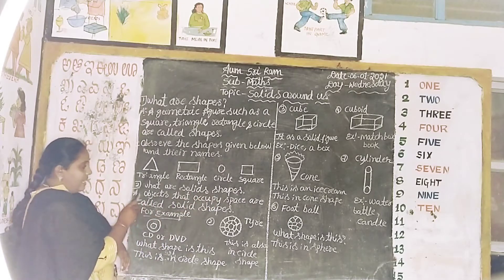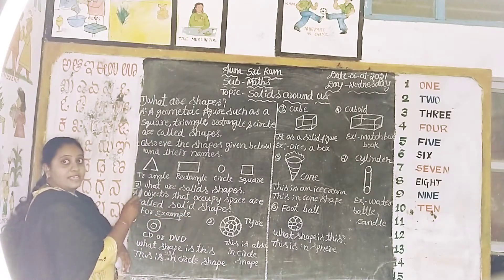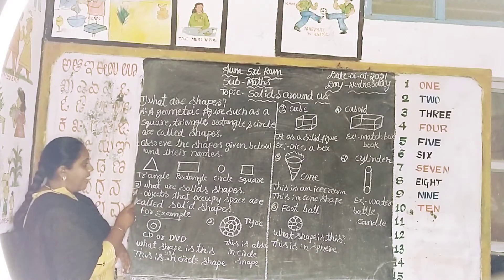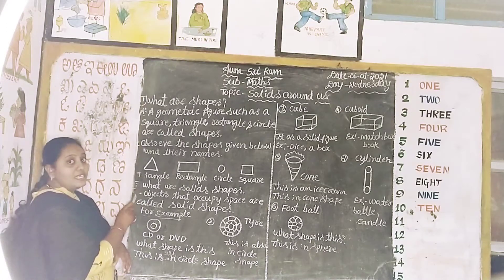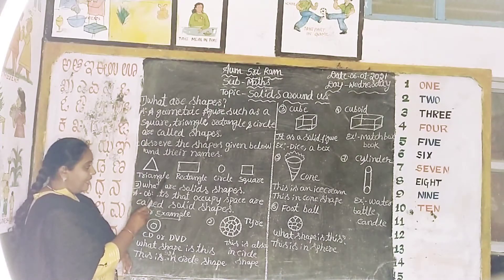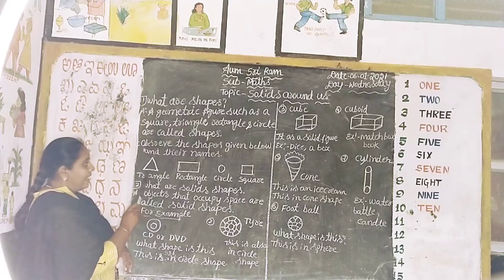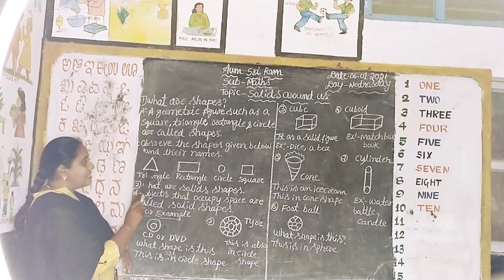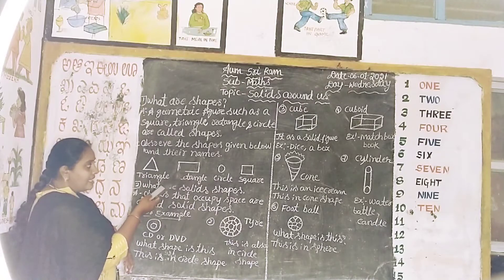What is this? This is a triangle. What is the spelling of triangle? T-R-I-A-N-G-L-E. Triangle. It has three sides.